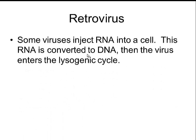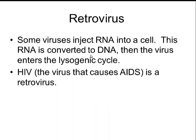Retroviruses are a unique type of virus that do things a little differently. Some viruses inject RNA into the host cell, but that RNA is then converted back into DNA, and then the virus goes into the lysogenic cycle. They're an RNA virus, but once the RNA gets inside the cell it becomes DNA and becomes part of the host cell. HIV, which causes AIDS, is a retrovirus. It's very difficult to treat because RNA viruses can mutate very quickly, and it also enters the lysogenic cycle, meaning it stays in the body forever.